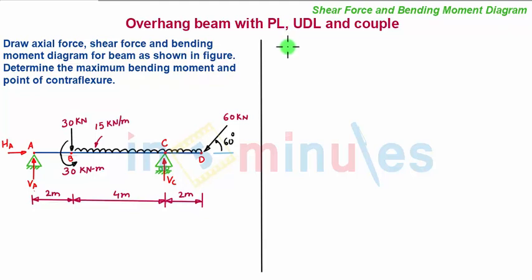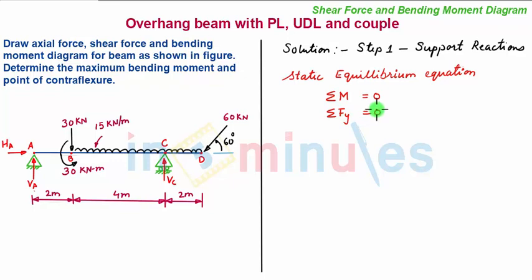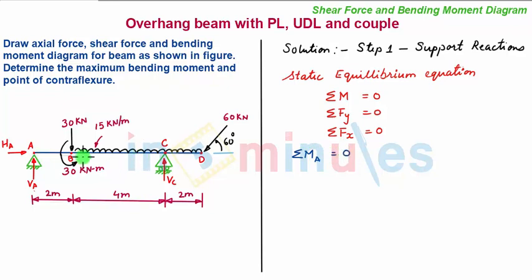Our first step is to find support reactions using static equilibrium equations. Since there are three unknown reactions — VA, VC, and HA — we use three static equilibrium equations. These are: summation of moments about any point equals zero, summation of all vertical forces (ΣFY) equals zero, and summation of all horizontal forces (ΣFX) equals zero. We begin with the moment equation, taking point A as the reference point.